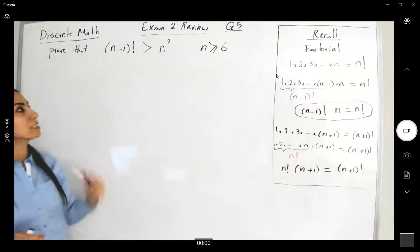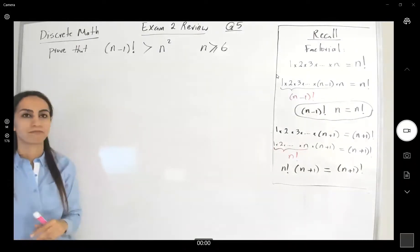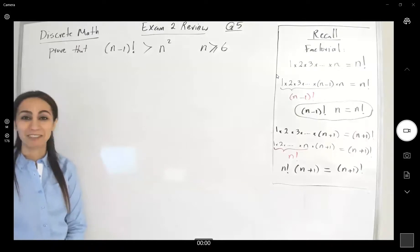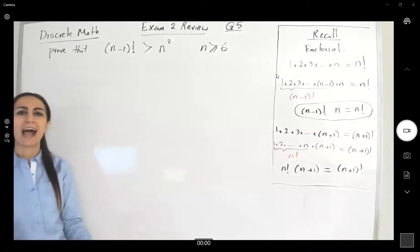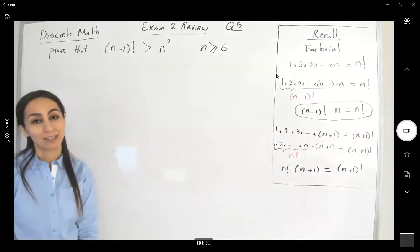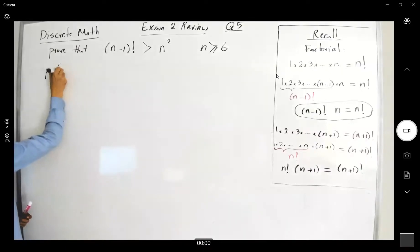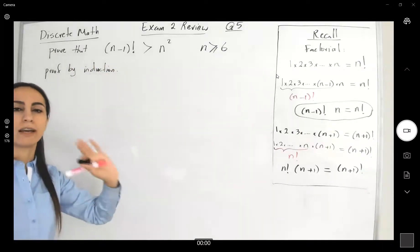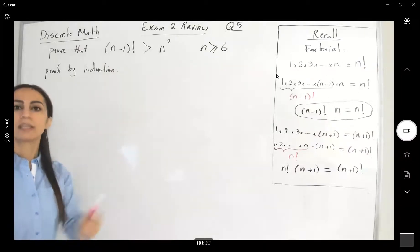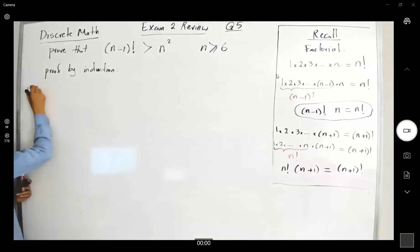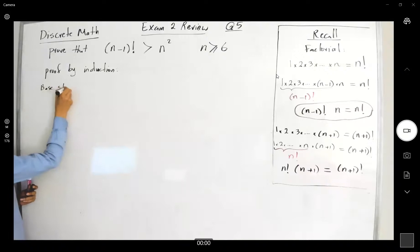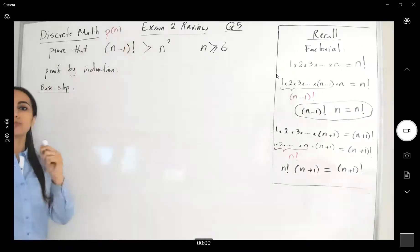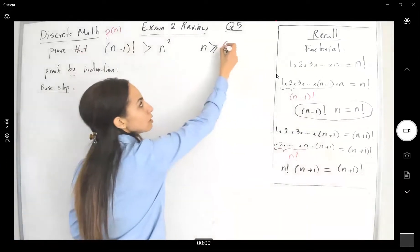The question says: prove that n minus one factorial is greater than n squared. We can use direct definition, contradiction, contrapositive, or induction. Since we have n and an inequality here, let's try using induction. When you're trying to prove by induction, you have a base step, and if the base step works, you move on to the inductive step. The base step says this statement — call it P(n) — must be true for the smallest value in the domain, which is six.